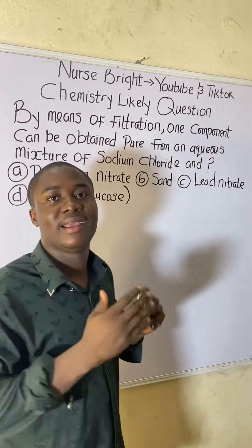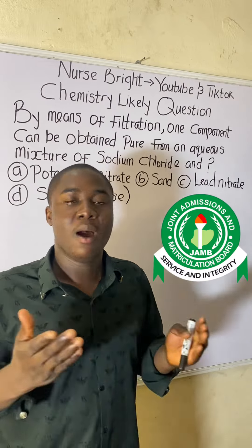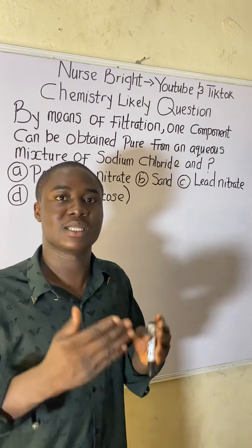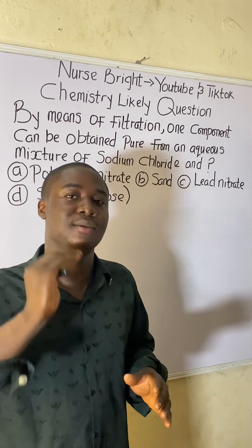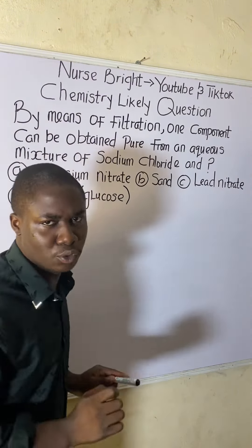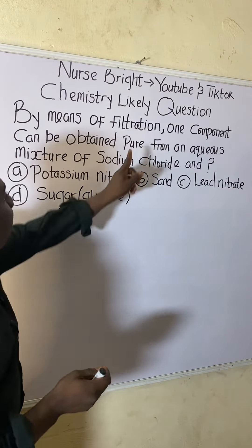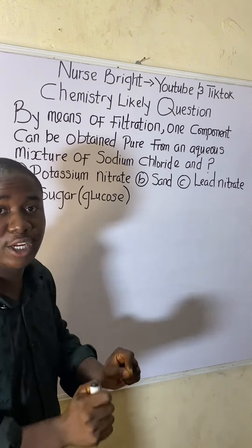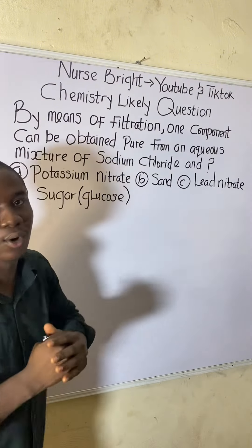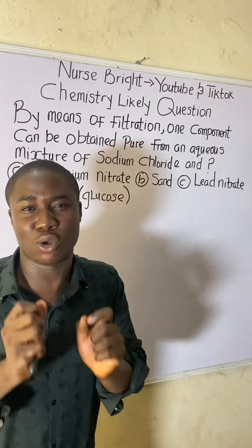You came across this question in your chemistry exam — whether you are preparing to write the JAMB exam, post-UTME examination, or any other chemistry-related exams. The question says: by means of filtration, one component can be obtained pure from an aqueous mixture of sodium chloride and what? Here are the options to this question.